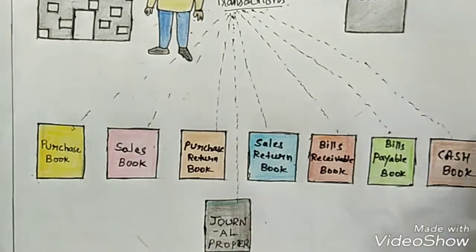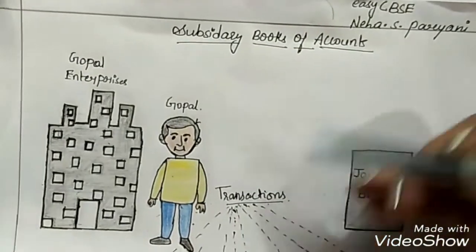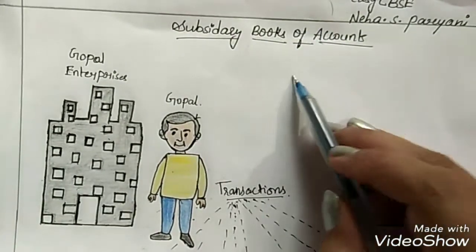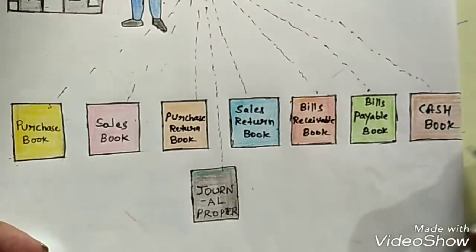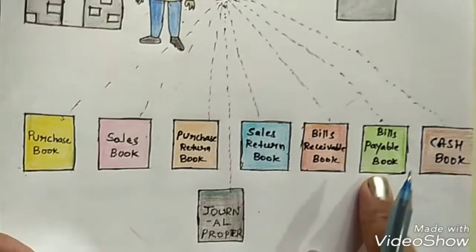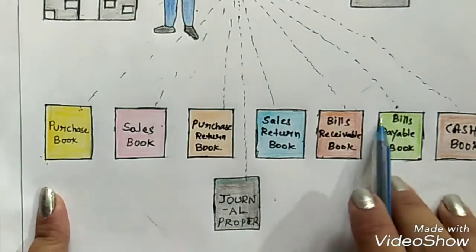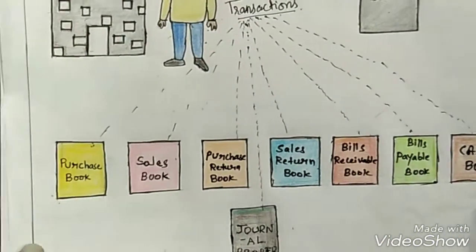In our previous session we discussed that there are basically 8 types of subsidiary books. We used an example to understand the concept of subsidiary books or special purpose books. One such book is the cash book. In our previous session we already discussed problems relating to the first 6 types of books. So in today's session we are going to discuss about cash book.